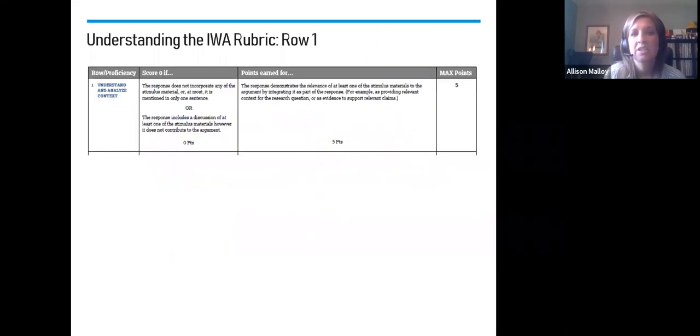Let's move forward and actually talk about the rubric. If you look at rubric row number one, I know it doesn't look this way, but if we think about points earned, you're going to earn points for a high scoring use of this. If you think about scoring a zero as a medium and a low, that'll help you better understand what this is actually going to look like. You're going to earn points. The response demonstrates the relevance of at least one of the stimulus to the argument by integrating it as part of the response. It can provide relevant context for the question or as evidence to support. You're going to earn a point in this row if you actually use the stimulus.